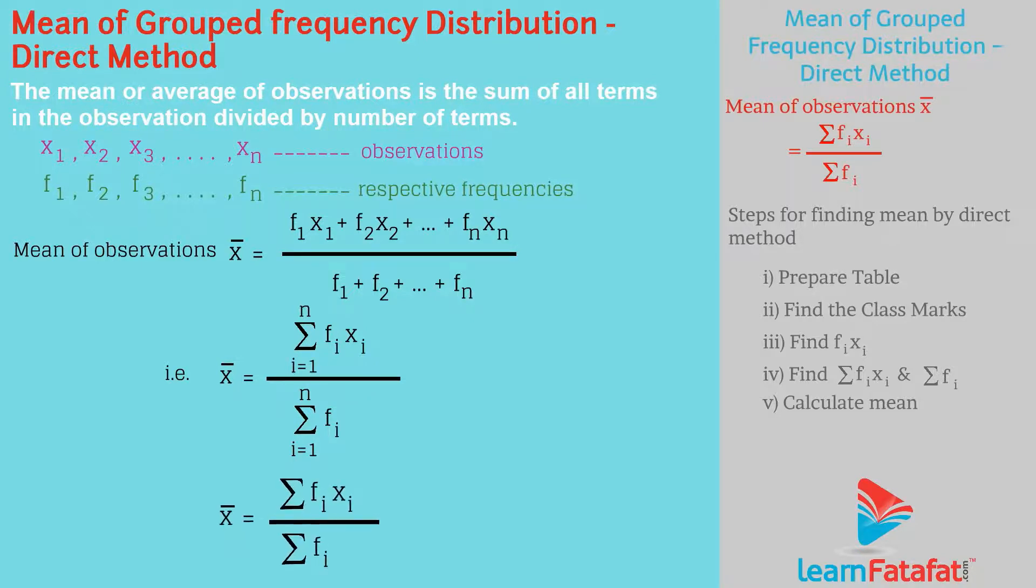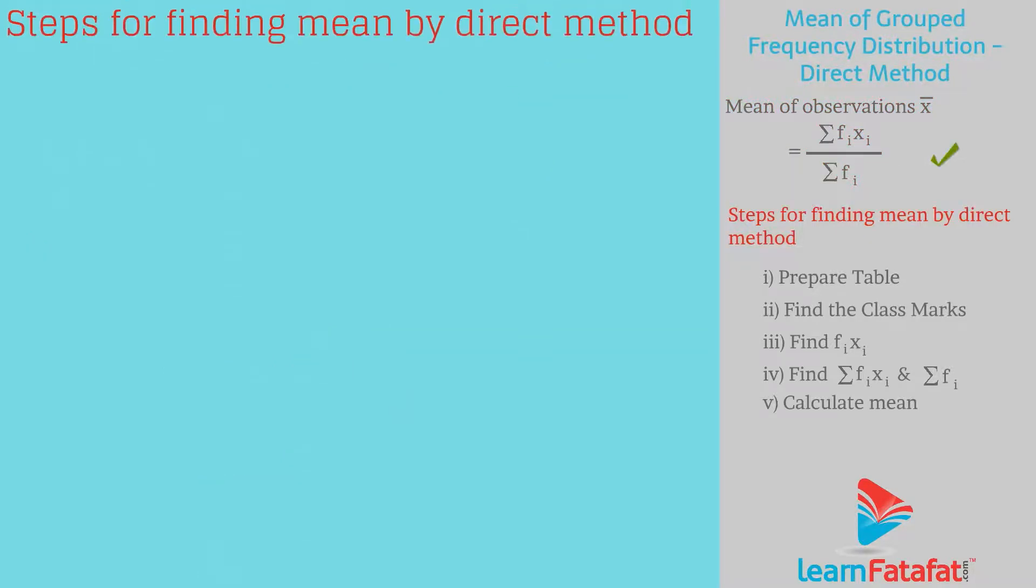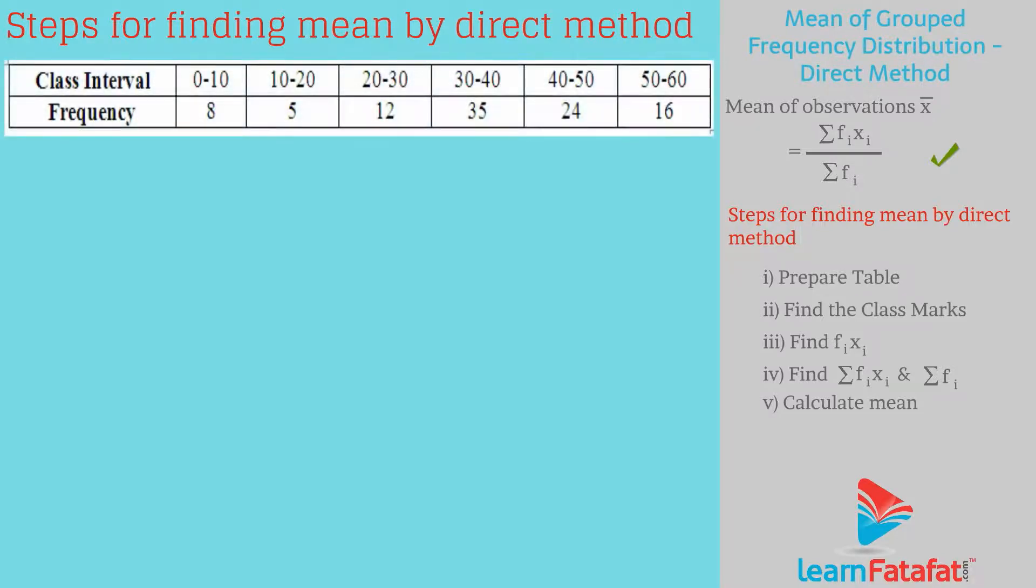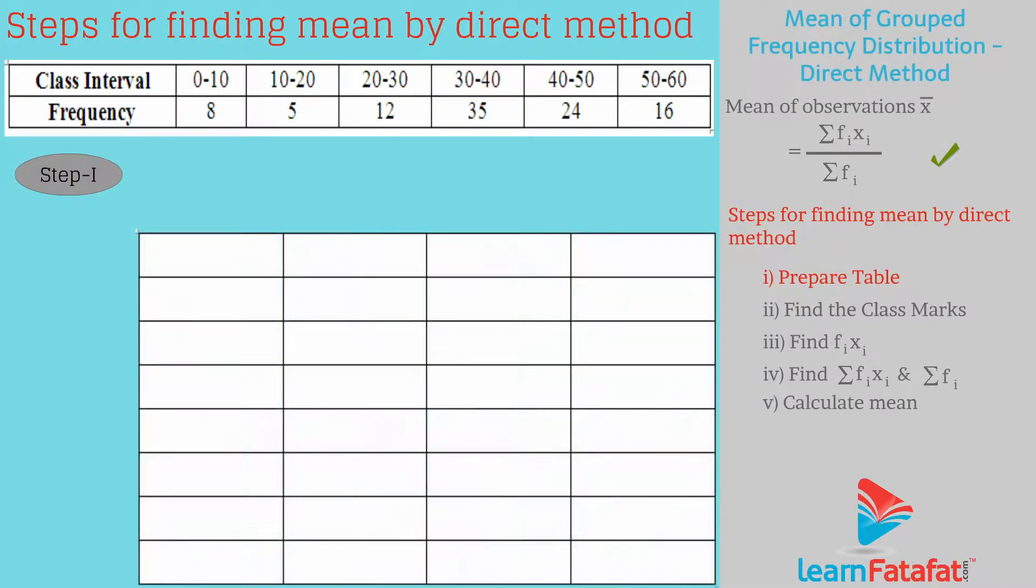More briefly it is given as shown. Steps for finding the mean by direct method: From the given table we can find the average of given distribution. Step 1: Enter the data in the table. In the table we have class interval, frequency, class mark, and fixi.